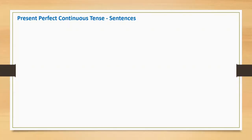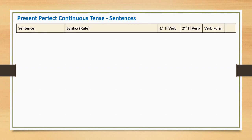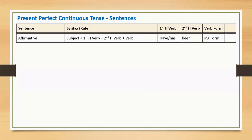In this slide, I will compare the syntax of different sentences in present perfect continuous tense. A present perfect continuous affirmative sentence is a positive or generic statement. It starts with subject, followed by first helping verb, second helping verb, and the ING form of the main verb.